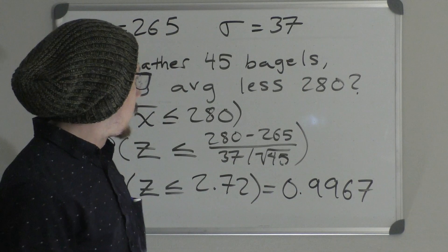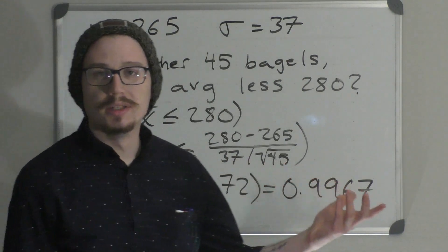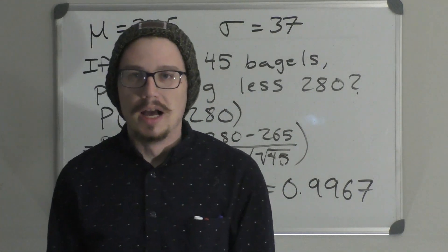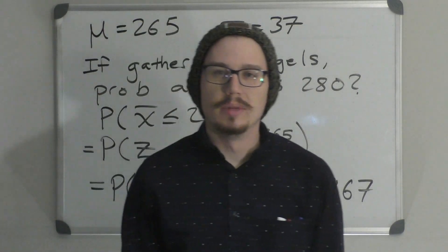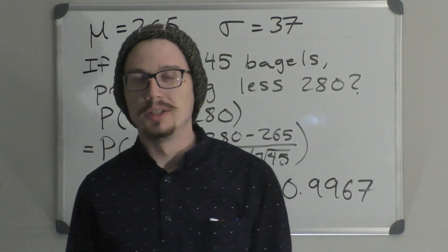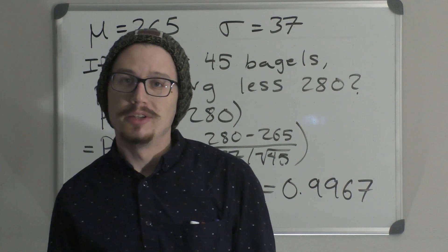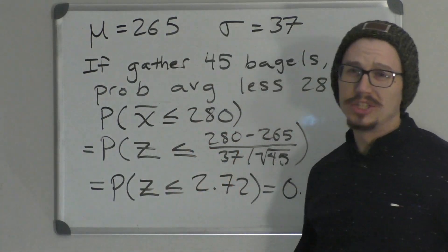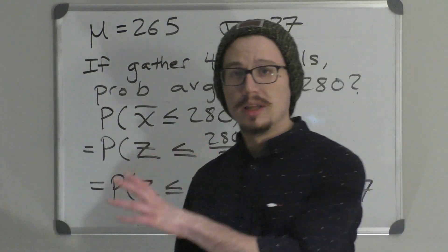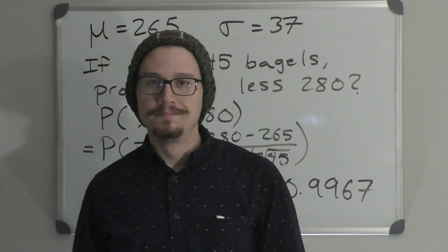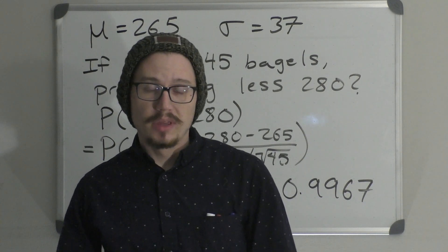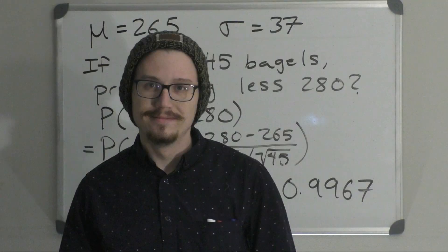Looking up Z = 2.72 on our standard normal table — row 2.7, column 0.02 — we find a probability of 0.9967. This process isn't really any different from what we did in Chapter 7; the only difference is X becomes X-bar and sigma becomes sigma over the square root of n. This formula will be used and modified in later chapters, and it's going to be very important going forward. That is it for Chapter 8 — see you in the next video.